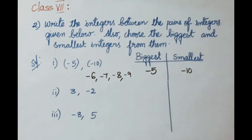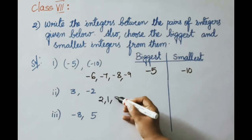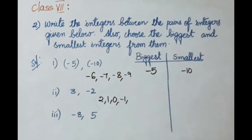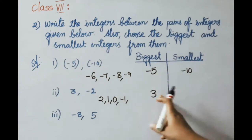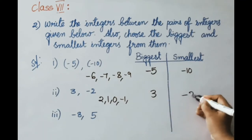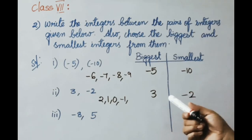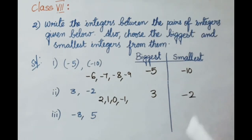See the next pair: 3 and minus 2. The integers between them are 2, 1, 0, minus 1. Between 3 and minus 2, the biggest integer is 3 and the smallest integer is minus 2. Because positive integers are the biggest numbers and negative numbers are the smallest integers.